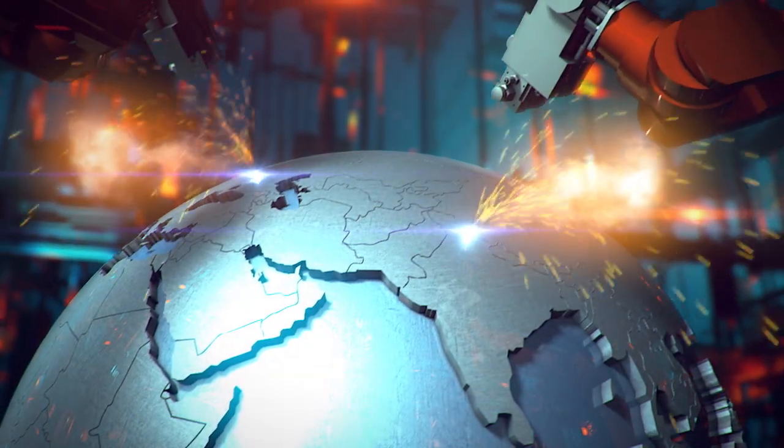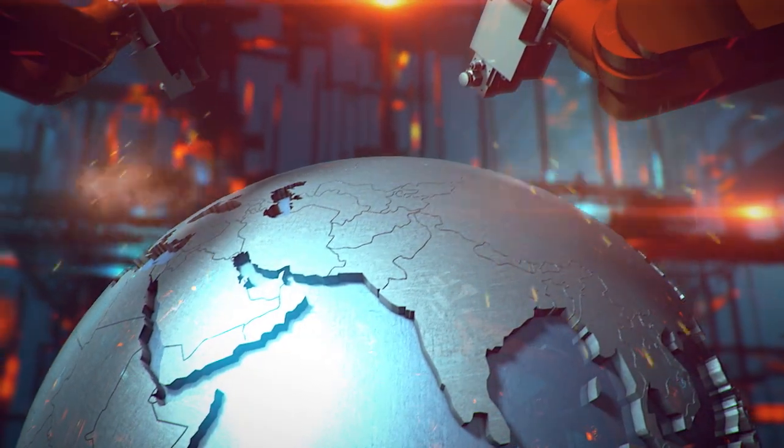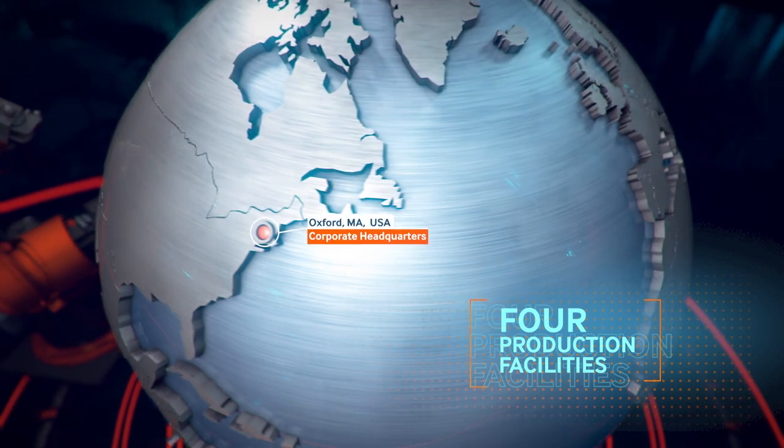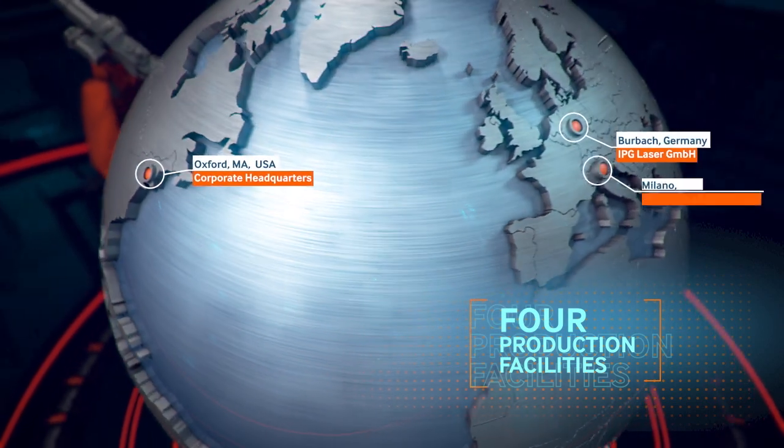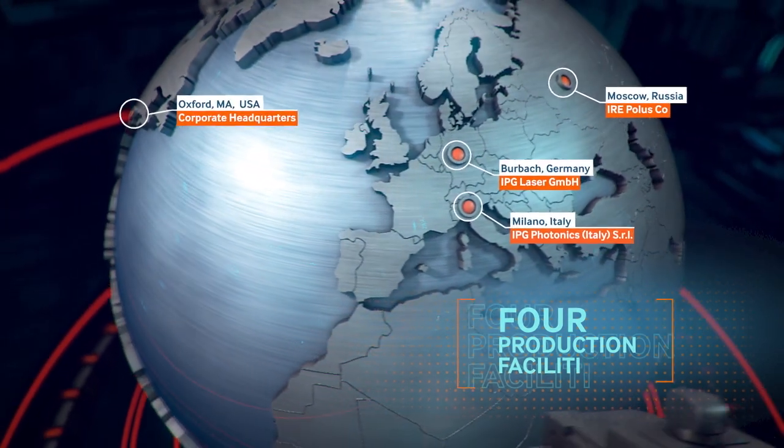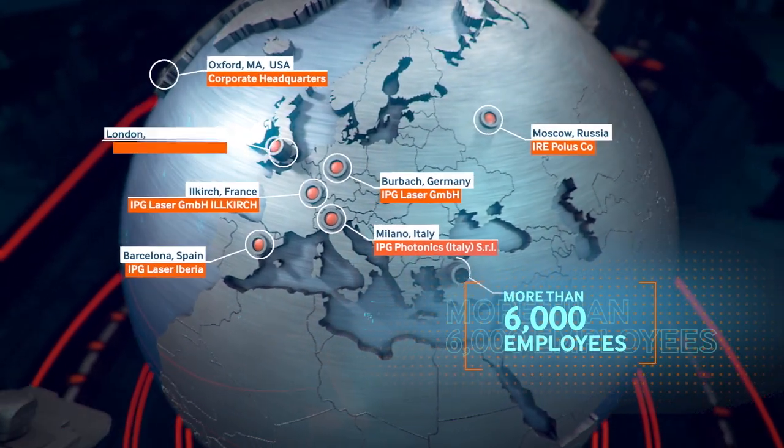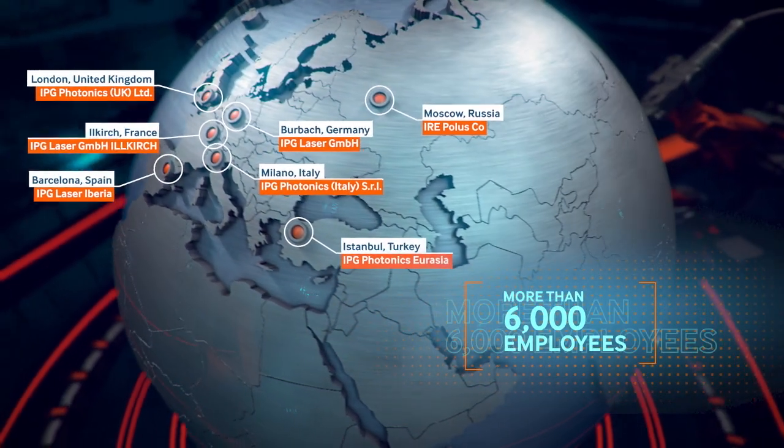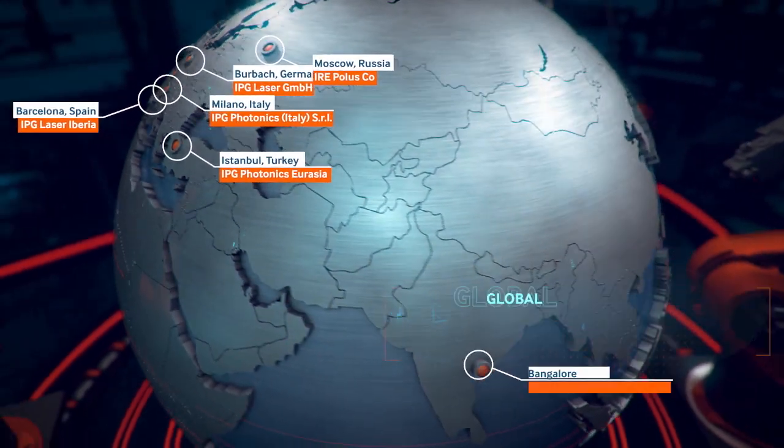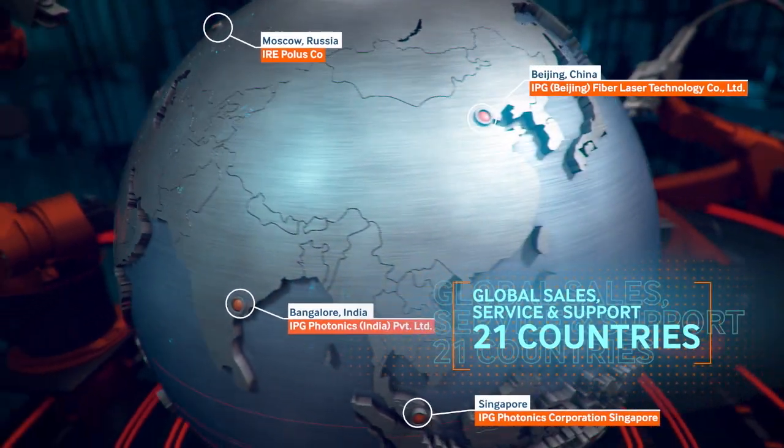IPG has four manufacturing facilities. These facilities are located in the United States, Germany, Russia, and Italy. Over 6,000 employees in state-of-the-art robotic production. IPG provides sales, technical support, warranty, and post-warranty maintenance all over the world, specifically in 21 countries.